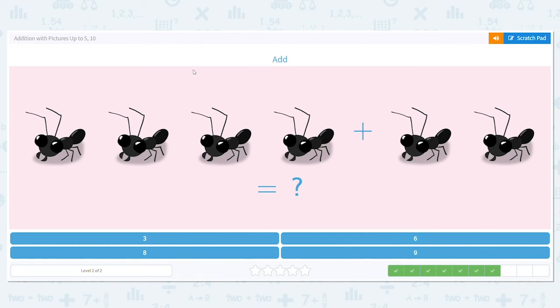Next one. Let's add up these ants. I have 4 ants on this side. And I have 2 ants on this side. So I'm doing 4 plus 2.